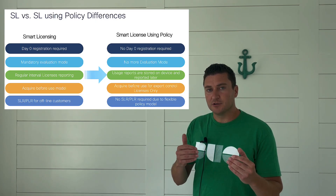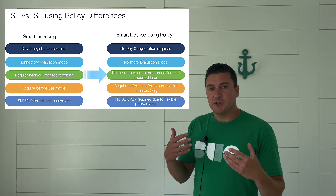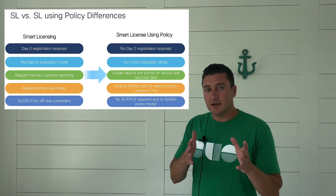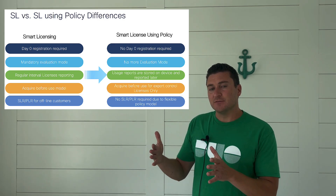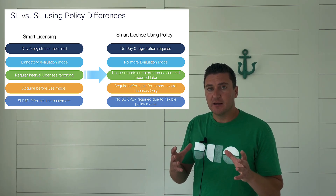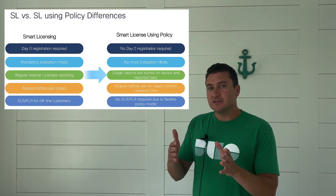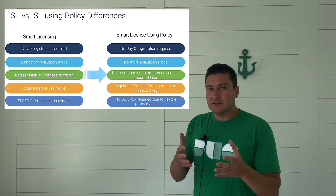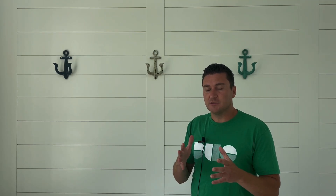Let's talk about the different iterations of smart licensing, because there are two. When this was originally launched five to seven years ago, it was just called smart licensing — every product continually reached out to your smart account to make sure a license was available. Some products still work like that today, such as Communication Manager and some security products. But a lot of iOS XE devices switched to something called SLP — Smart Licensing Using Policy — or you might hear it called SLE, Smart Licensing Enhanced. Instead of the box pulling a license from your smart account, the box now reaches out to tell the smart account what it's using.